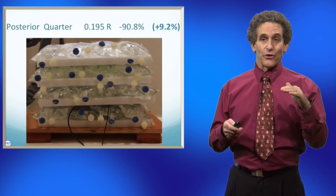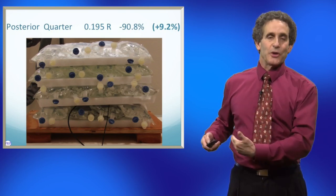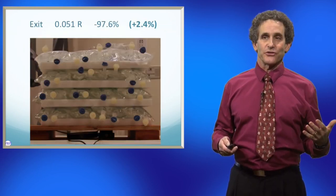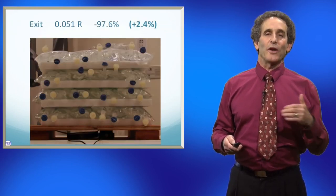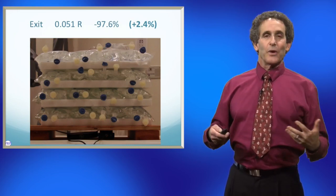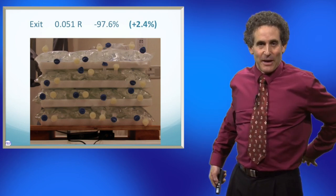When we're down at three quarters, we're now down to 9.2% made it three quarters of the way into the patient. And when we get to our exit dose, we're at 2.4%. So only 2.4% of the original radiated dose got to the backside and made it out of the patient.